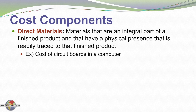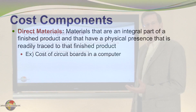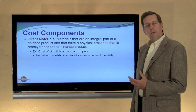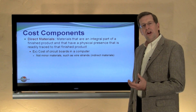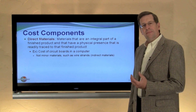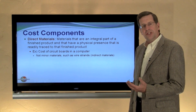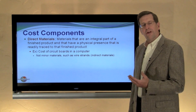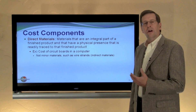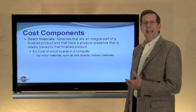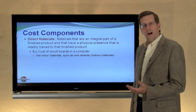An example might be the cost of a printed circuit board included in a computer. Importantly, some costs that might be physically present in the finished product but are not material are considered to be indirect material costs.